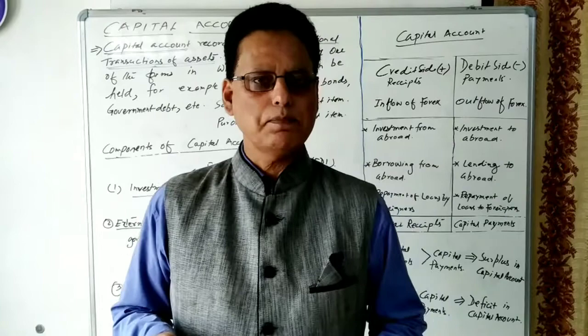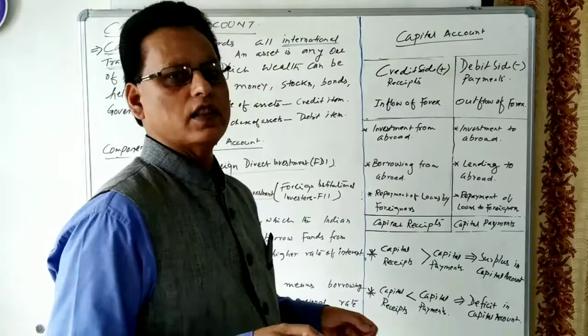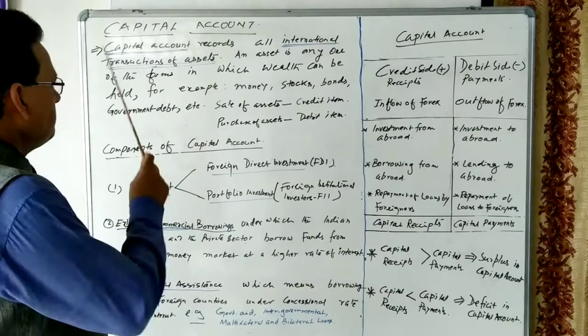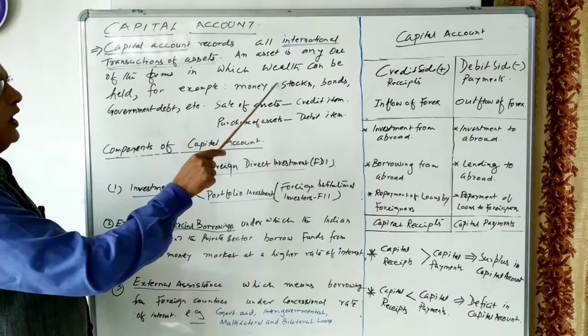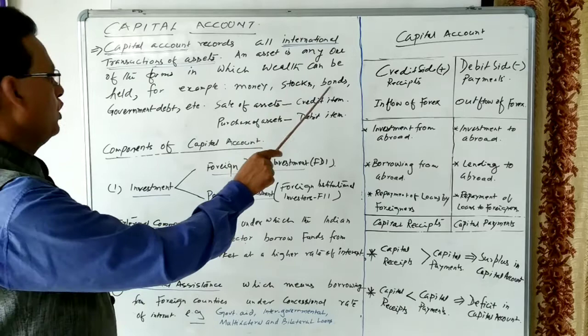Now let us see the capital account. Capital account records all international transactions of assets. An asset is any one of the forms in which wealth can be held — for example, money, stocks, bonds, government debt, etc.